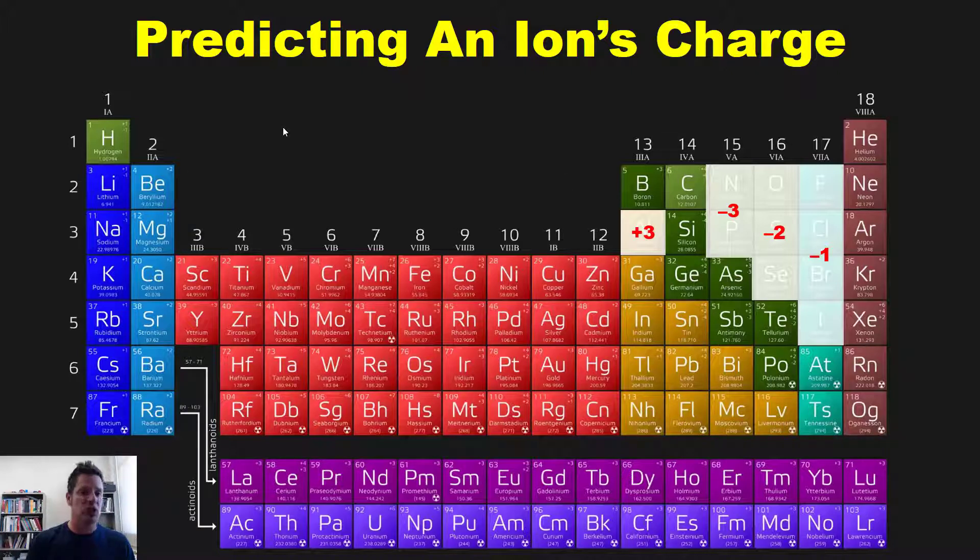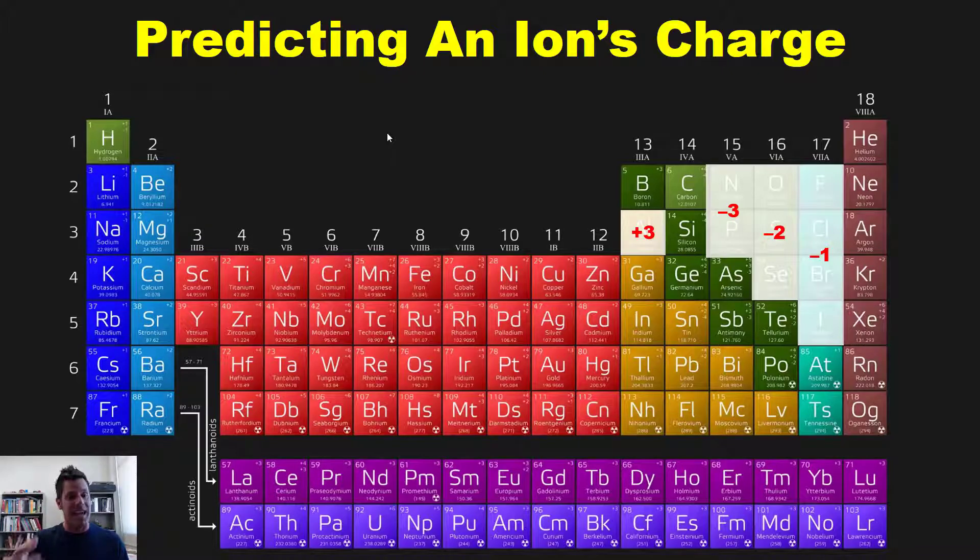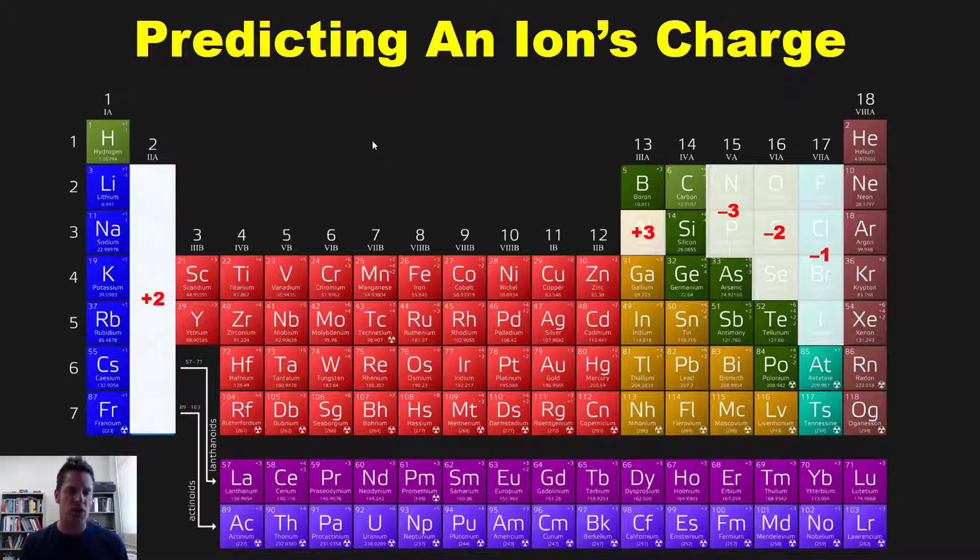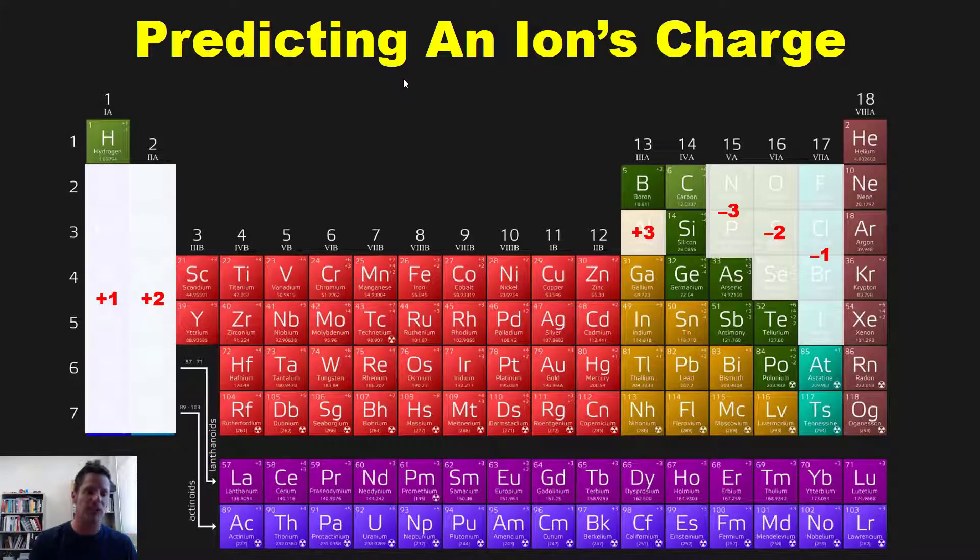By analogy, elements in column 2A over here don't want to gain six electrons to have a negative 6 charge. Instead, it's much easier for them to lose electrons and shift just two columns to the left to attain that noble gas electron configuration of the noble gas that precedes them. So column 2 elements are going to attain plus 2 charges, shifting two elements to the left. By comparison, column 1 metals are going to attain plus 1 charges.